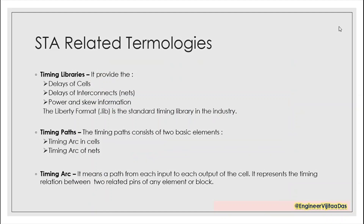There are three major timing analysis related technologies. The first is timing libraries. We need timing libraries because for STA calculation we need cell delays and net delays to get the path delay — and these are provided by the timing libraries. They also provide power information and SKU information. Timing libraries come in a .lib format file — the Liberty format — which is standardly used in the industry. The STA tool uses the delays of nets and cells to calculate path delays and verify them against timing requirements.